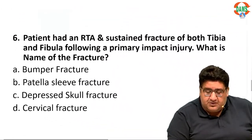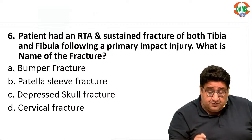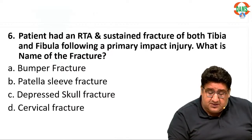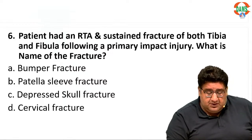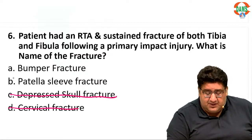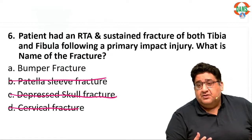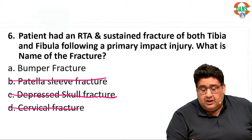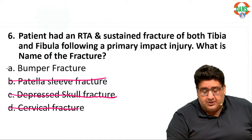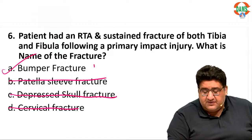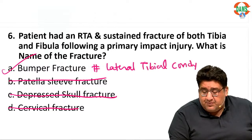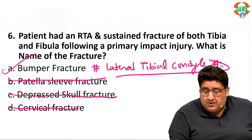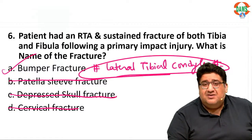For question number 6, a patient had an RTA and sustained fracture of both tibia and fibula following a primary impact injury — what is the name of the fracture? None of the recalled options — depressed skull fracture, cervical fracture, patella sleeve fracture — satisfy the question. The only thing that satisfies it is bumper fracture, though technically bumper fracture does not include the fibula and is just a fracture of the lateral tibial condyle.